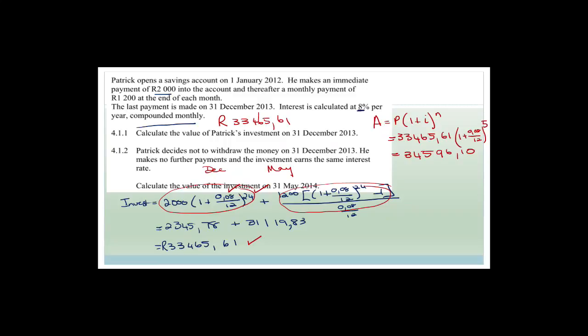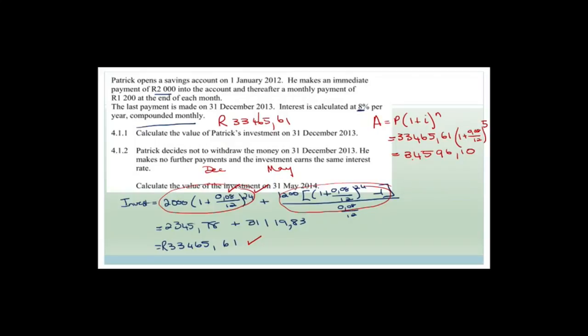If you use the wrong formula you get zero marks. But if you made a mistake in the previous question and used a different principal, say 28,000, and used that consistently here, you still get a method mark, a mark for substitution, and a mark for the answer.